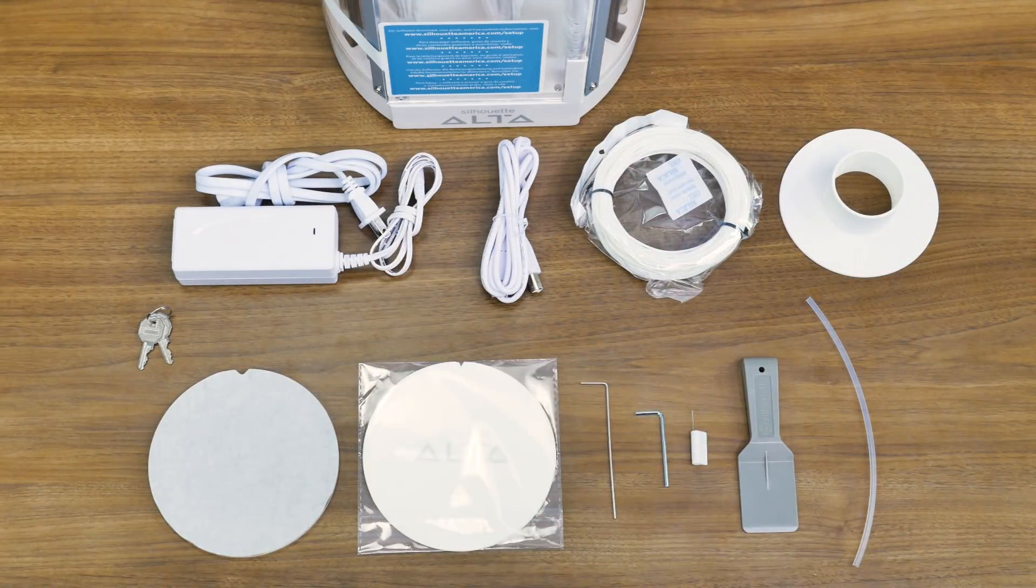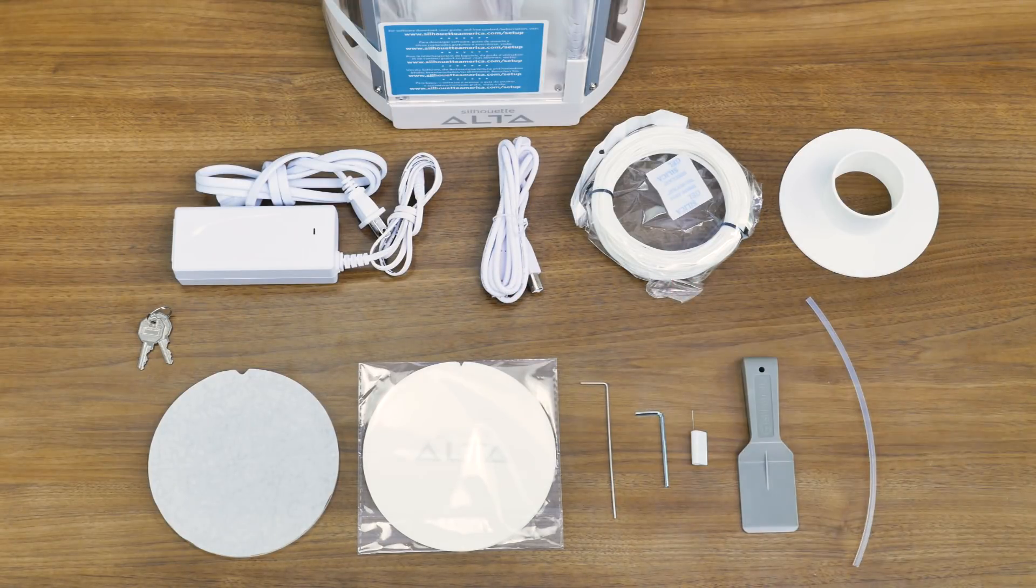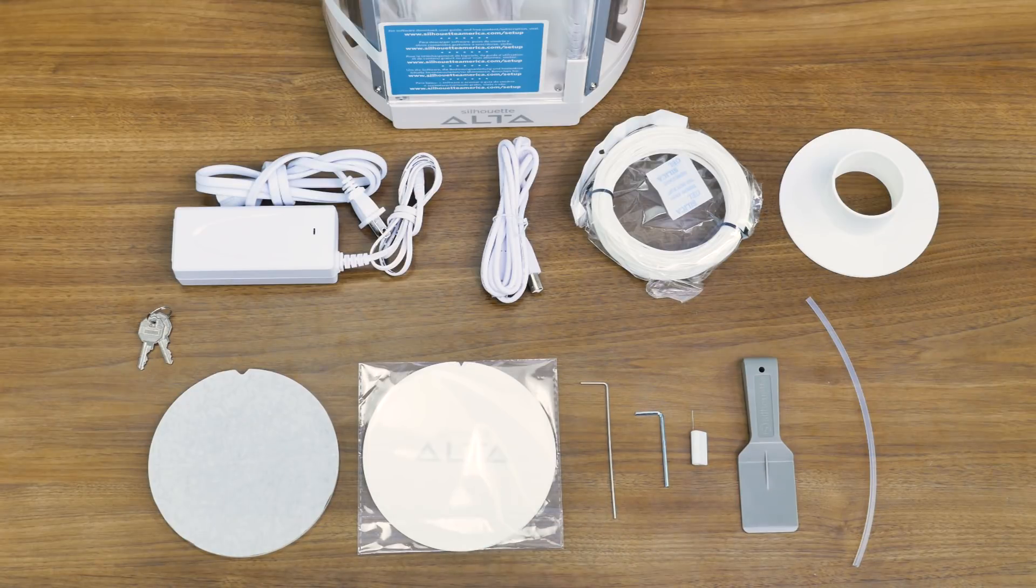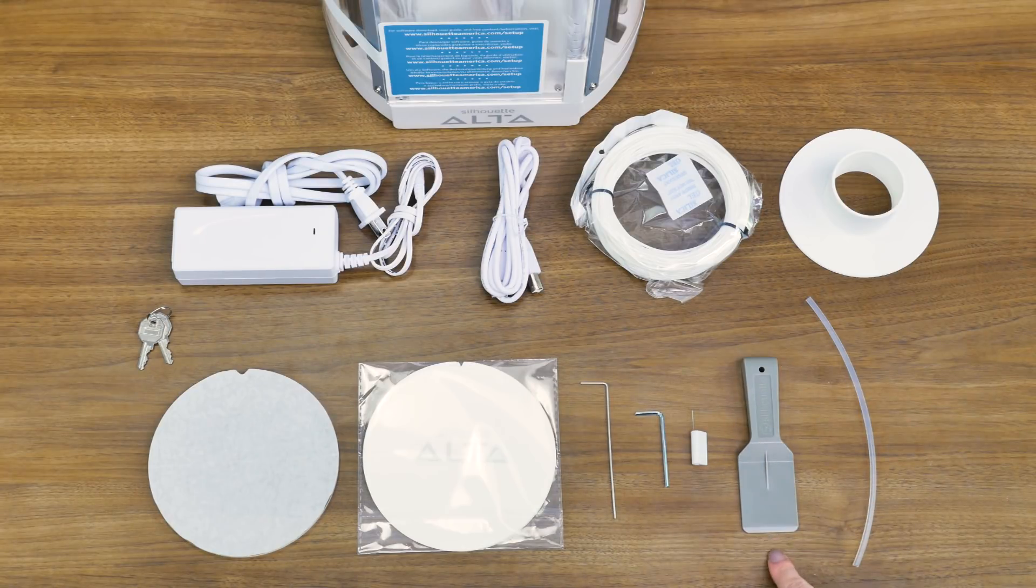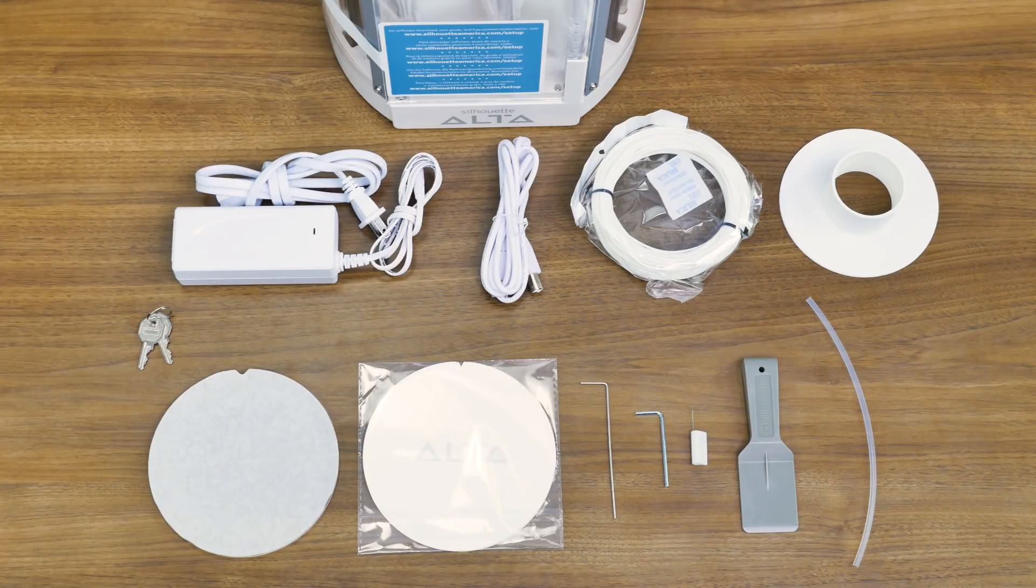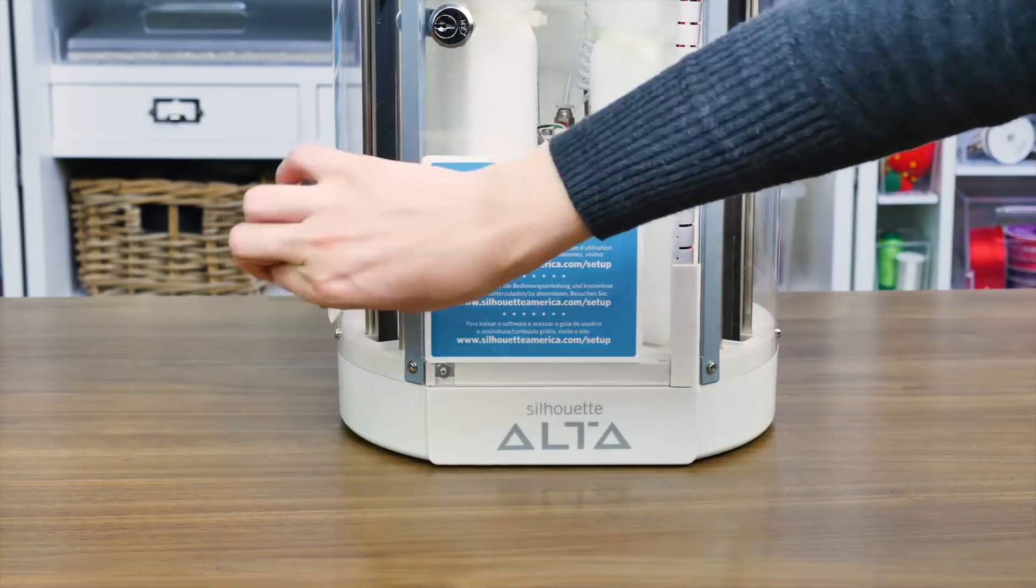In addition to the machine, there should be a power cord with an AC adapter, a USB cable, loose white filament and a filament spool, a platform and platform tape sheets, two different sizes of hex keys, a filament tube, a nozzle cleaner, a spatula tool, and keys to lock and unlock the case surrounding the Alta.